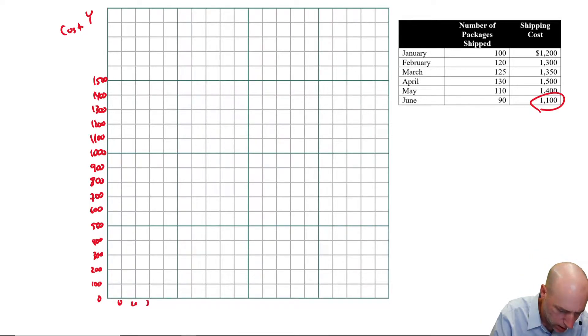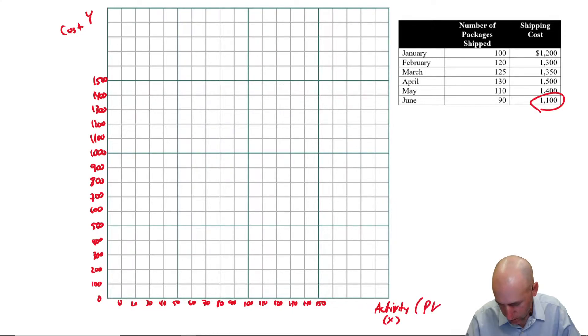And of course, that's our y-axis and y is cost. I can stop at 15. We could go up to 20, but we know 1500 is all we're going to use. This one goes up to 130. Let's just make these 10s. 10, 20, 30, 40, 50, 60, 70, 80, 90, 100, 110, 120, 130, 140, and 150. So we've got our scale. We didn't use everything. And this is activity. And that's our x. And in this case, it's packages shipped.